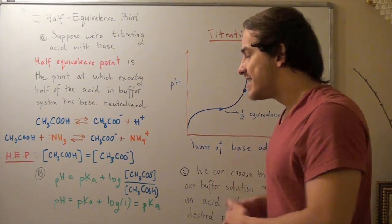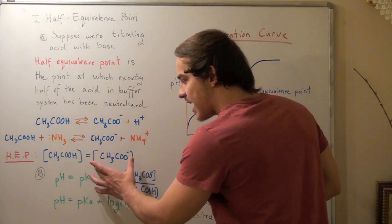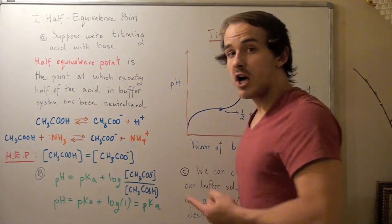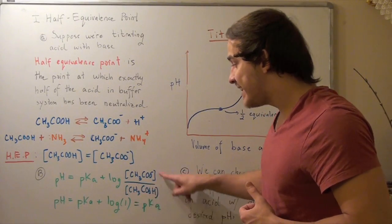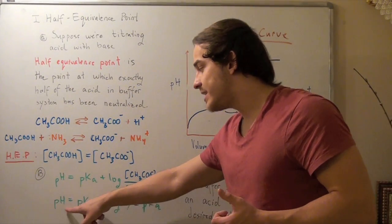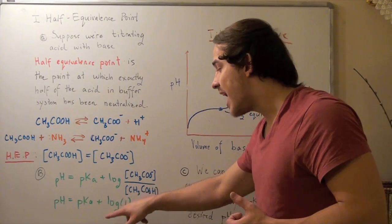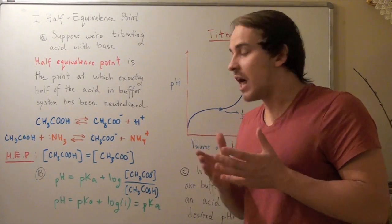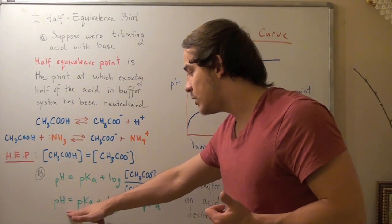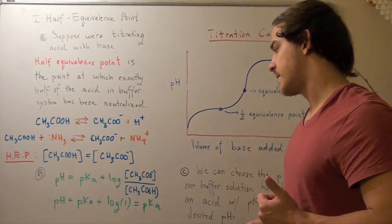Notice that since this guy equals this guy, this divided by this is 1. So what's inside here is simply 1. Let's rewrite it. pH equals pKa plus log of 1. But what's log of 1? Log of 1 is 0. And that means pH equals pKa.